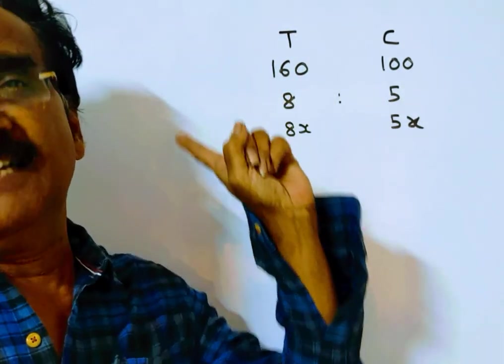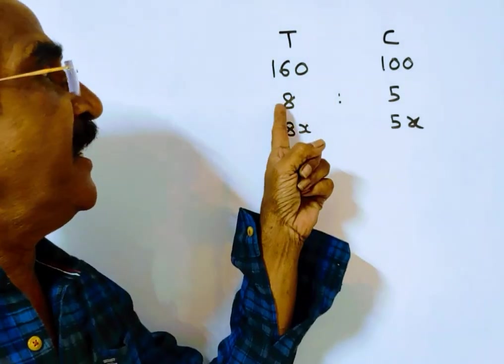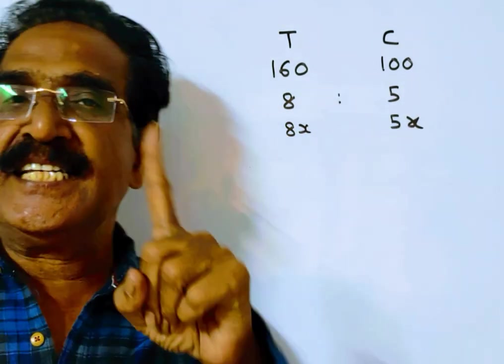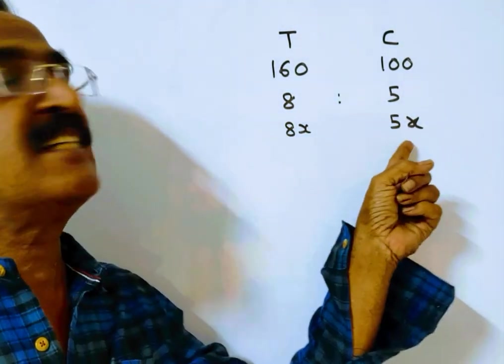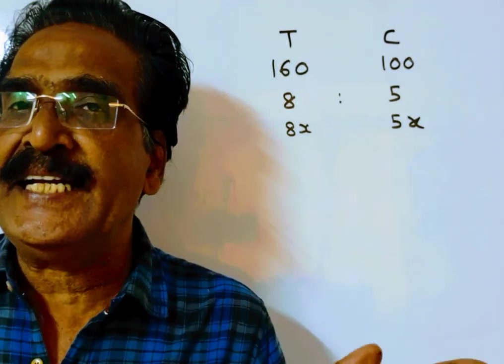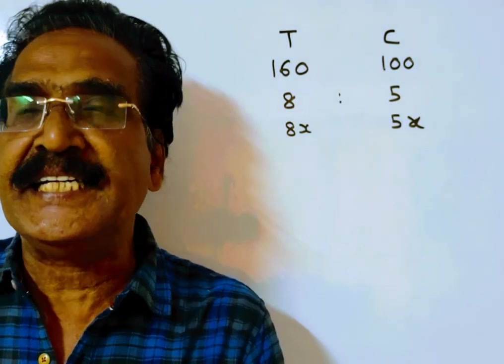The ratio is 8:5. So 8x is the speed of the train, 5x is the speed of the car. Now it is given that the train had stopped for 20 minutes.